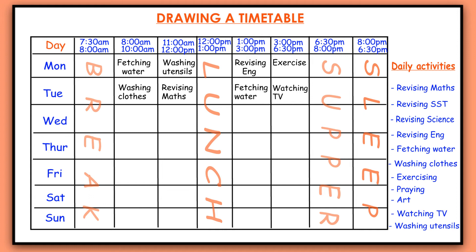Wednesday. On Wednesday I can go and fetch water after breakfast. After fetching water I decide to read a book — I'll be doing social studies. Then I go for lunch. After lunch I want to do some art. After art I go for exercise, because you need to exercise most times in the week. Then I go for supper and sleep.